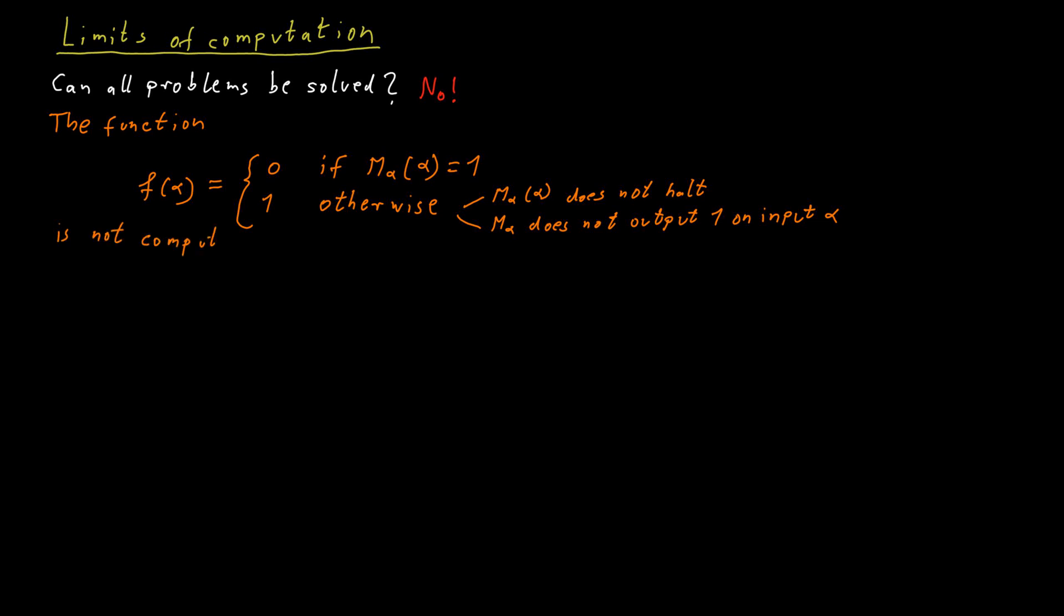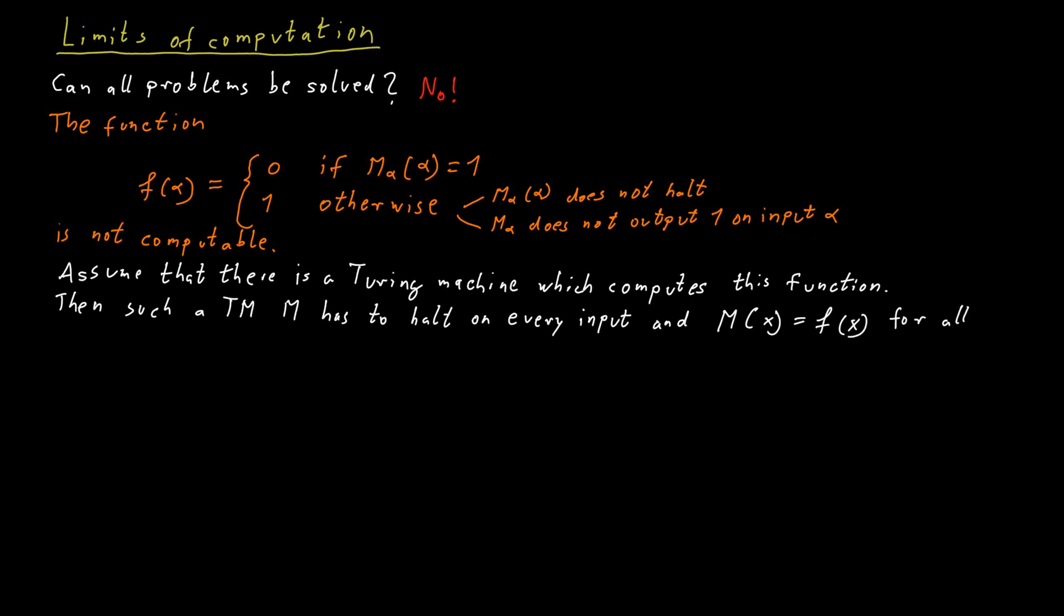So, this problem is not decidable, and it looks a bit more specific now rather than just relying on an abstract counting argument. But the proof essentially uses diagonalization. Assume for contradiction that there is a Turing machine that decides this particular function. Then, the Turing machine m needs to halt for every input, because we said if a Turing machine does not halt on some input, it doesn't decide anything. And it also needs to compute the correct result. So, for every input x, m of x should be equal to f of x.